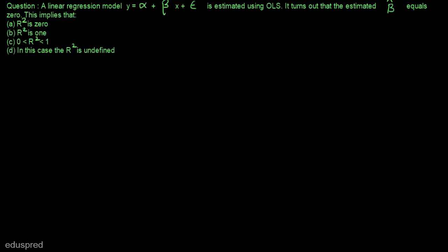First of all I am making a small change: the linear regression model is y = alpha + beta*x + epsilon. Instead of small y and small x I am writing capital Y and capital X, because it becomes really easy to work with capital X and capital Y, and this is what we are used to.